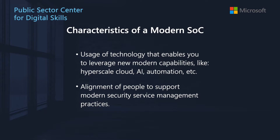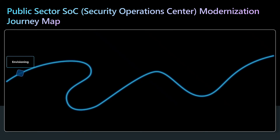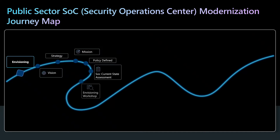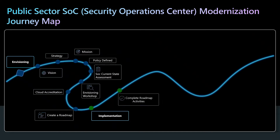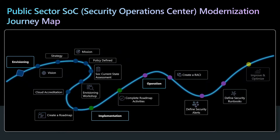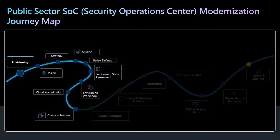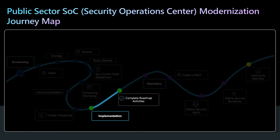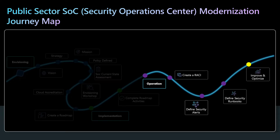Operational processes should be updated to reflect the changes in technology and people's roles and responsibilities in a modern SOC. The modern SOC modernization journey for public sector organizations can be divided into three different phases: envisioning, implementation, and then operationalization of that SOC.